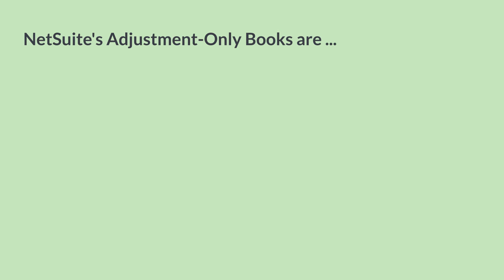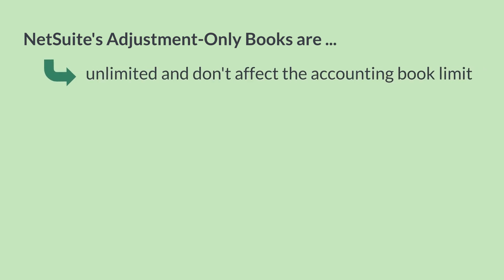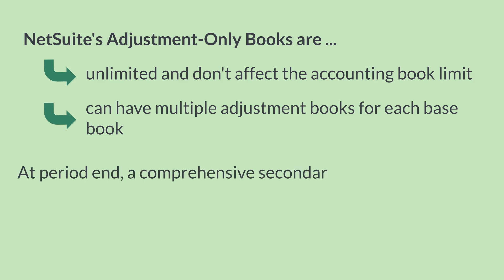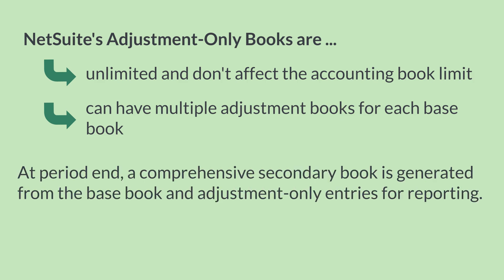Adjustment Only Books are different from a typical secondary accounting book. For one thing, Adjustment Only Books do not count toward your accounting book limit. In addition, you are not limited to having only one adjustment book per base book. At the end of an accounting period, a secondary book will be compiled for reporting purposes based on both the base book and the book-specific journal entries that were entered for the Adjustment Only Book.